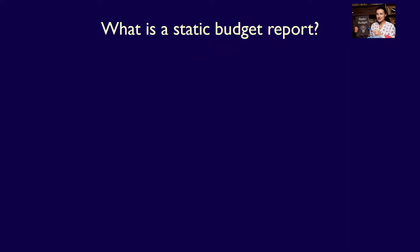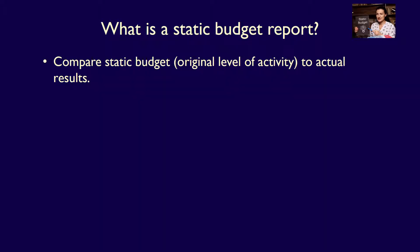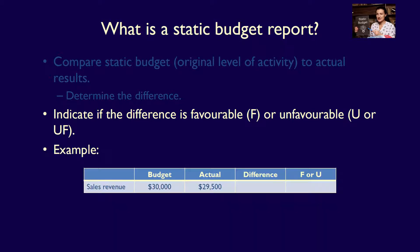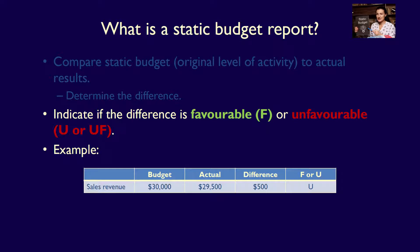What is a static budget report? It's a comparison of the static budget at the original level of activity against actual results. The difference between the static budget and the actual results is then calculated, and we determine if the difference is favorable, indicated with an F, or unfavorable, indicated with a U. For example, if sales revenue is $30,000 in the static budget and we compare it to actuals of $29,500, then the difference is $500 and it would be denoted with a U as unfavorable, because actual sales are lower than expected, which is bad for the company.